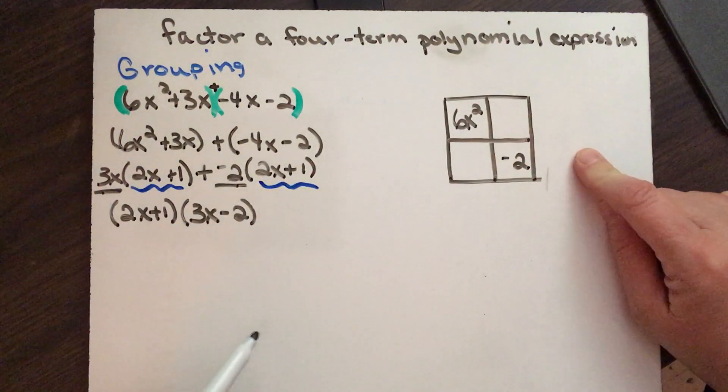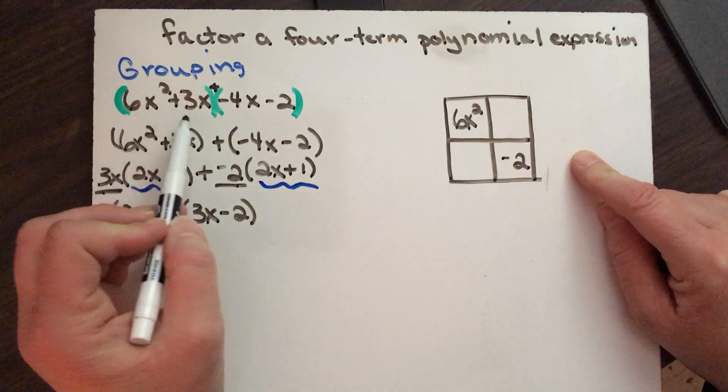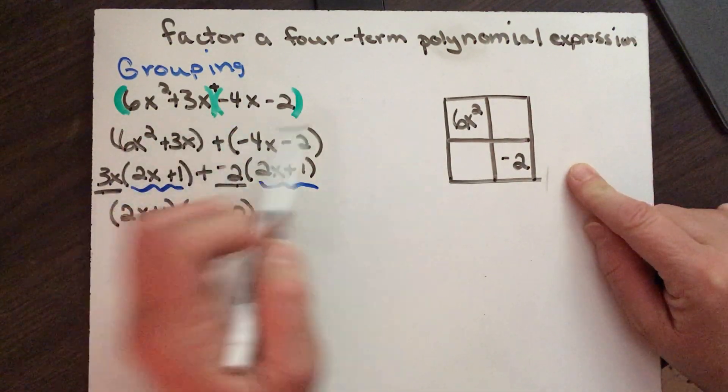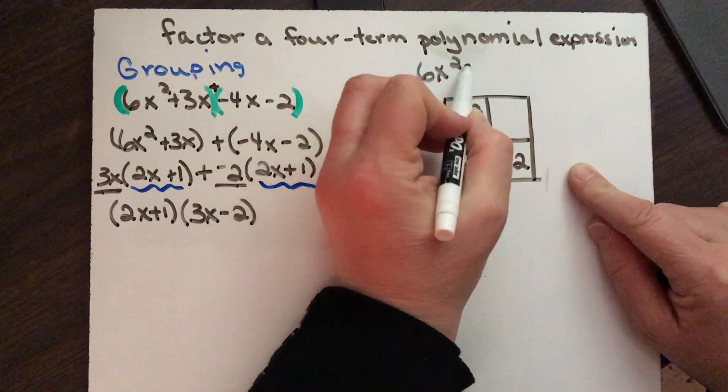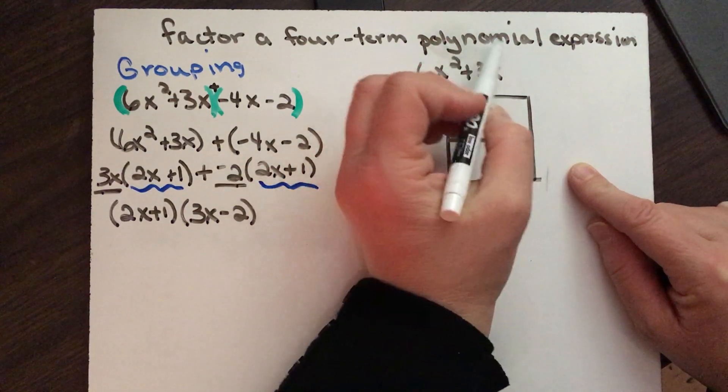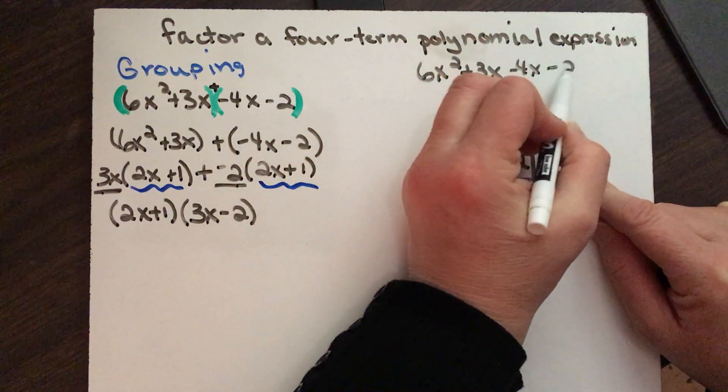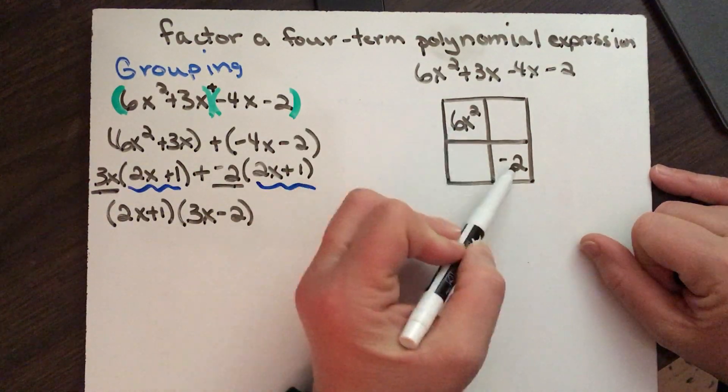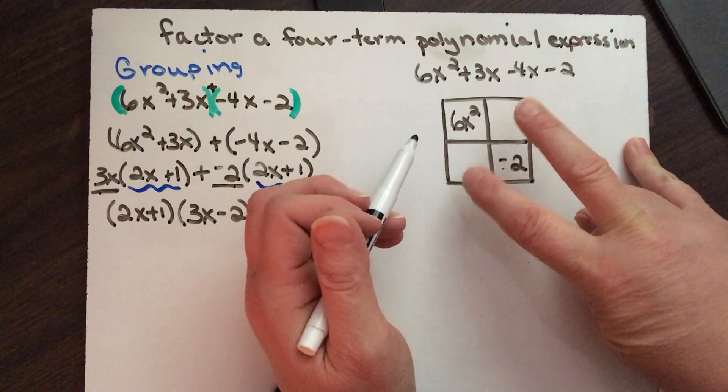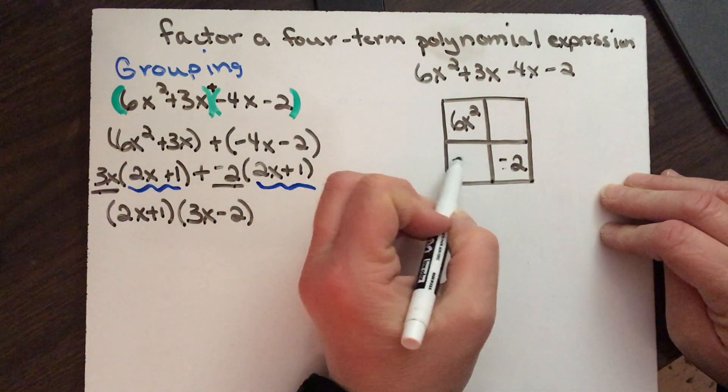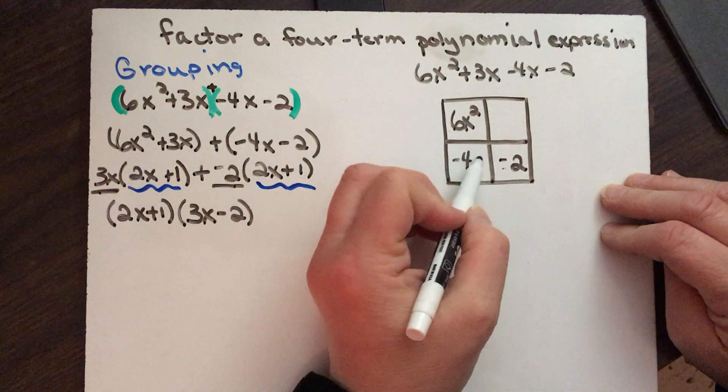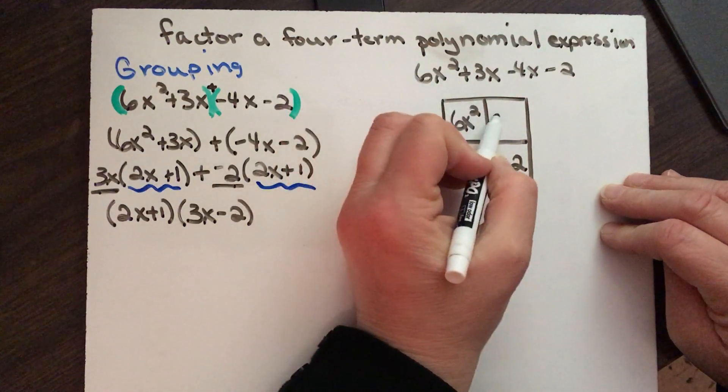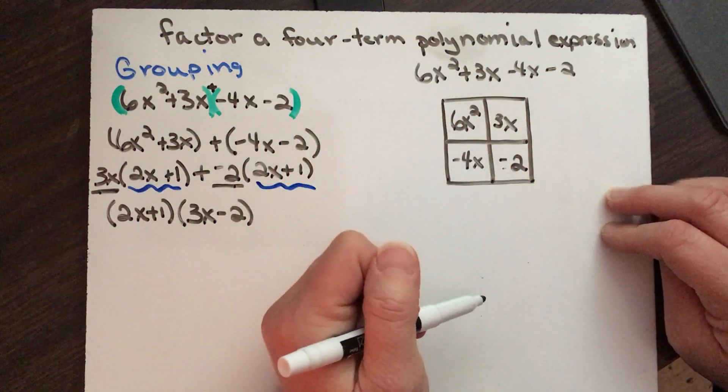Alright, so let's do that same thing over here. So we had 6x² plus 3x minus 4x minus 2. So I've already primed a couple of my boxes because I always want to remember my first and last terms are here, and then where you put these two pieces it doesn't really matter, you just want to be consistent with your work so that it's easier for you to manipulate.